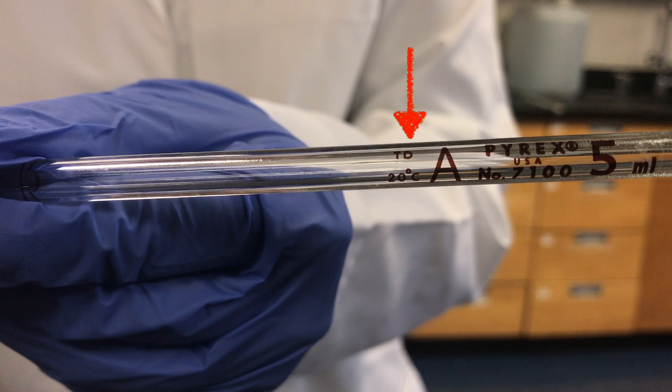Next to that it shows the letters TD which stands for to deliver, which means this pipette will deliver 5 milliliters plus or minus the standard error. Even if there is still a small amount of liquid left at the tip, it's all accounted for.